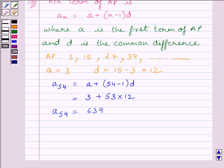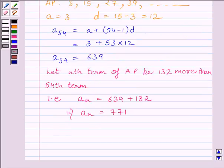Now, let us assume that the nth term of AP is 132 more than the 54th term. That is, an = 639 + 132, or we can say the nth term is equal to 771.